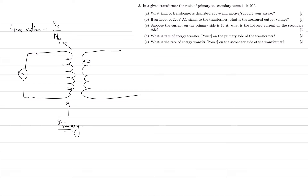Mutual induction. Remember, moving charges generate magnetic fields, and changing magnetic fields will induce current, which is just moving charge. So the point is, on this other side, this is the secondary side of the transformer. Sometimes it's called the secondary coil or side — don't be confused by those, they mean the same thing.